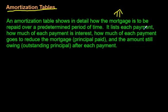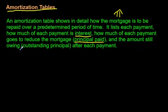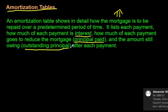It lists each payment: how much of each payment is interest — that's the amount the bank gets — and how much of each payment goes to reduce the mortgage, which is the principal that you have paid down. That's the money that reduces how much you owe, which is often too slow. And then the amount still owing, the outstanding principal, after each payment.